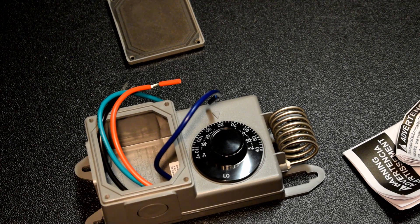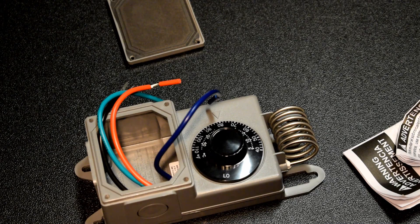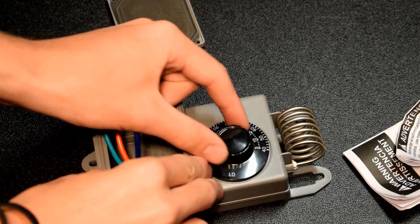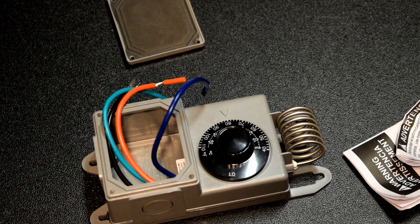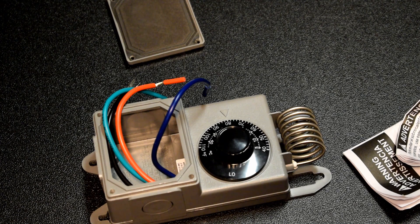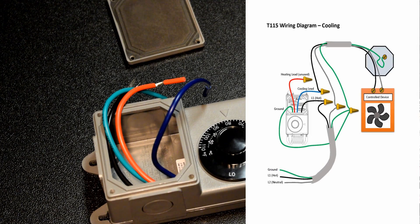So if you wanted a fan to come on at 80 degrees in your greenhouse to cool the greenhouse down, you'd put power into the black wire, tie the fan off to the blue wire, cap the red wire off. That way, when a cooling demand was required, the blue wire would be powered and the fan would be on.